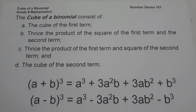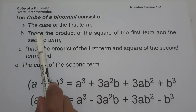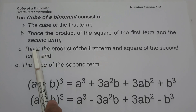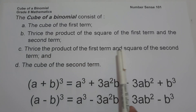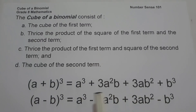In today's video we are going to discuss how to find the cube of a binomial. We are going to start with simple to complex examples and explain everything in detail. When talking about the cube of a binomial, it consists of four terms. The first term will be the cube of the first term, the second term is thrice the product of the square of the first term and the second term.